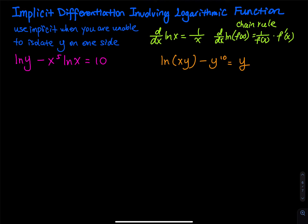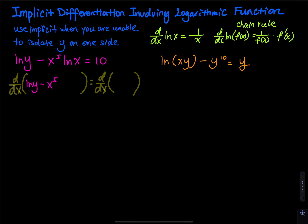Let's get started. For the first problem, we have to differentiate both sides. We have to do d/dx of the left-hand side and d/dx of the right-hand side — that means take the derivative on both sides with respect to x. We have ln(y) minus x to the fifth times ln(x) on the left, and ln(10) on the right. The derivative of ln(10) equals 0.